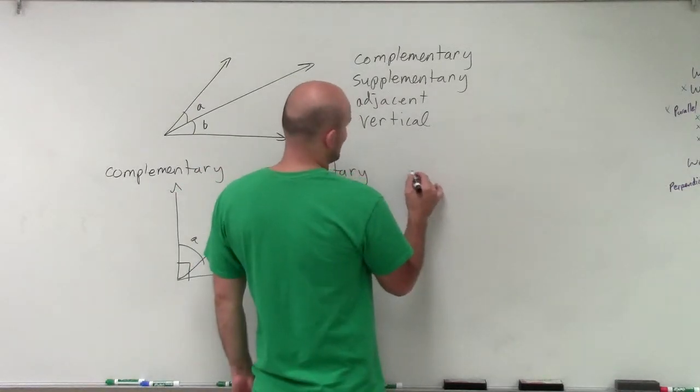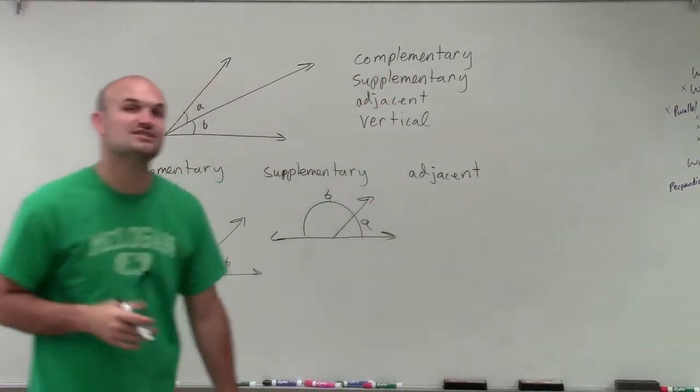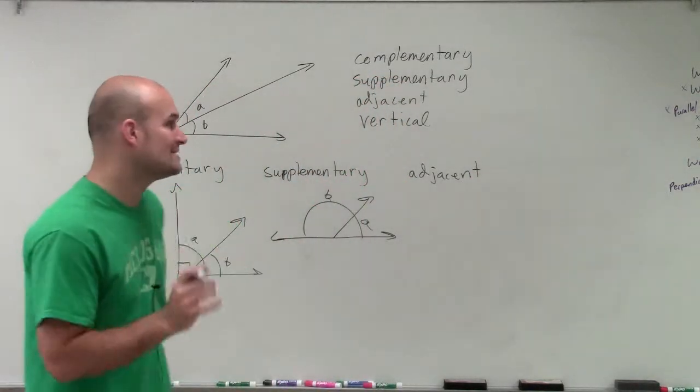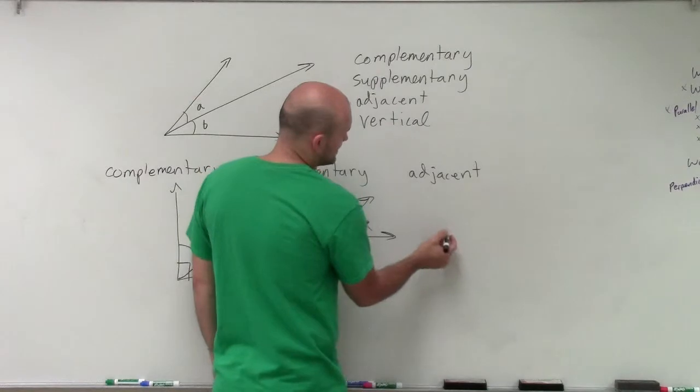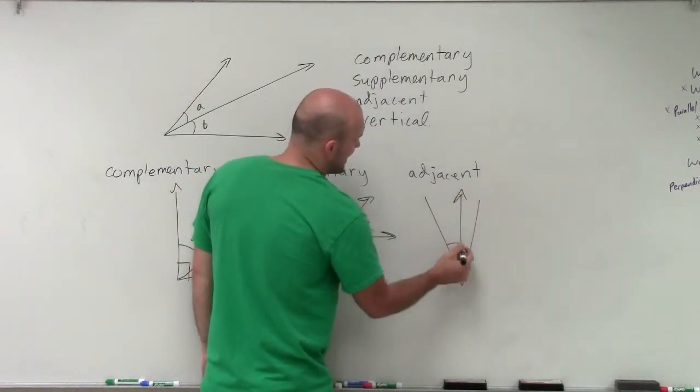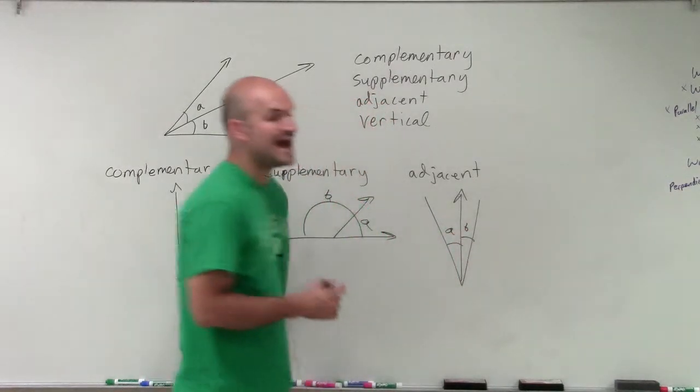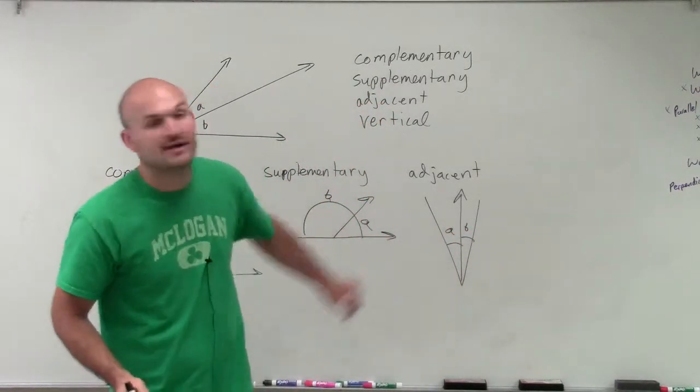Now adjacent angles are going to be angles that share at least one side. So when we're looking at adjacent angles, let's just look at something like this. If the angles, it doesn't matter what they measure up to, but if my angles A and B share the same side, then they're going to be adjacent.